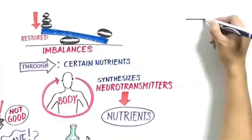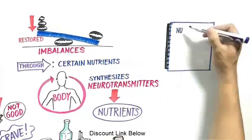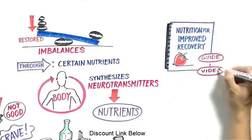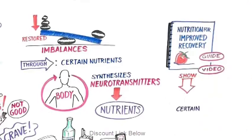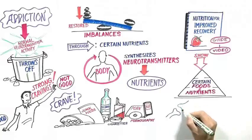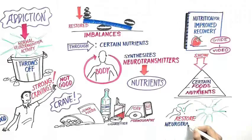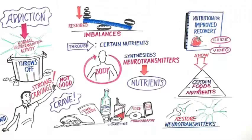But this biochemical imbalance can be restored through certain nutrients because the body synthesizes neurotransmitters from nutrients. Now doesn't that finally make sense? Now in the printable nutrition for improved recovery guide and video, I will show you certain foods and nutrients that restore these depleted and malfunctioning neurotransmitters.